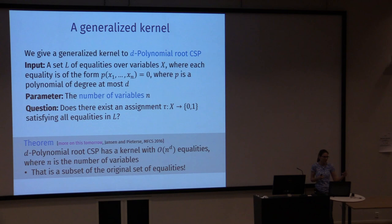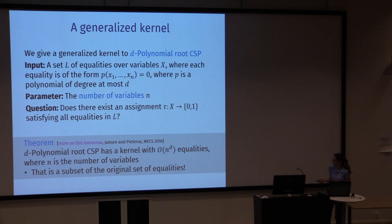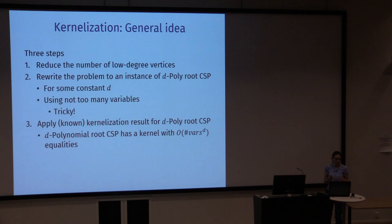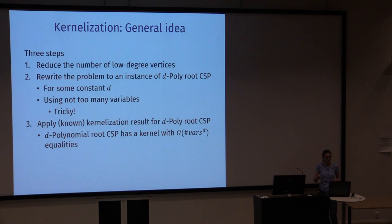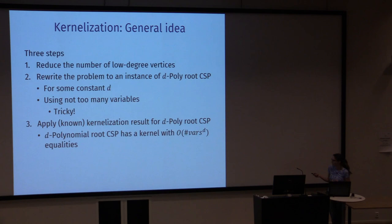I will use this as a black box result. The plan for kernelising 2-CNCF colouring is: first reduce low-degree vertices exactly as before; then rewrite the problem to an instance of d-polynomial root CSP; then apply the known kernelization for d-polynomial root CSP. I need to be careful about two things: the degree must remain a constant, and the number of variables cannot be too large — ideally linear in k, not one variable per vertex, otherwise the kernel size makes no sense.